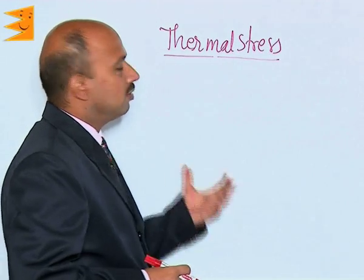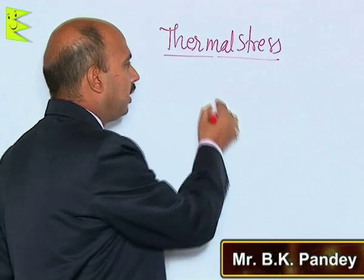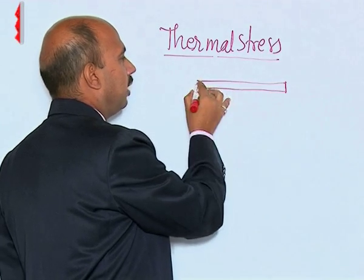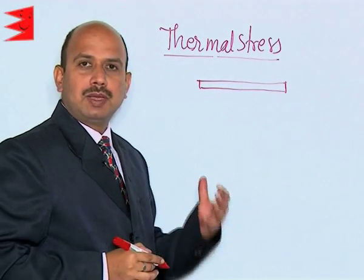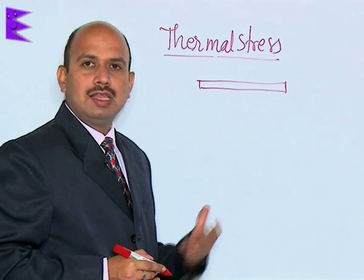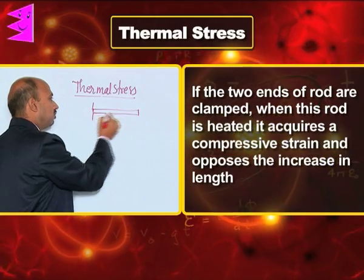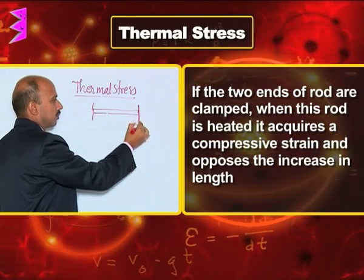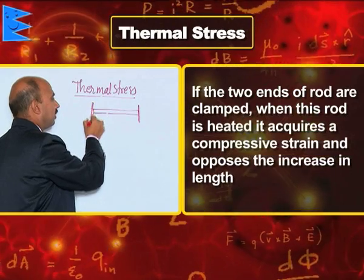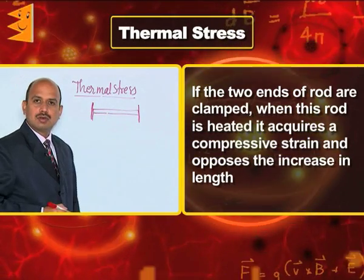Our next topic is thermal stress. If you have taken a rod and it is heated, there is an expansion — that expansion is known as thermal expansion, and that is a linear expansion if it is along the length. If the two ends of the rod are clamped, so rigid support is given and they are clamped at both ends, what happens?